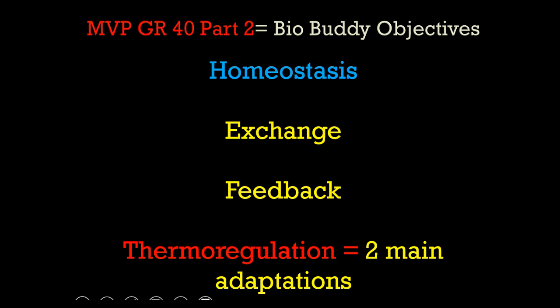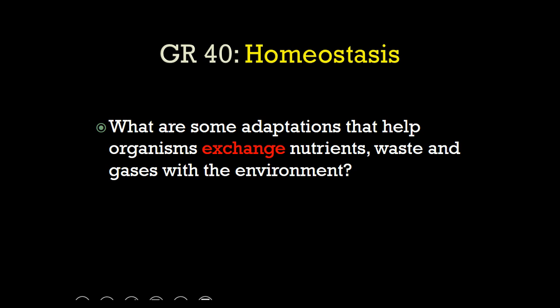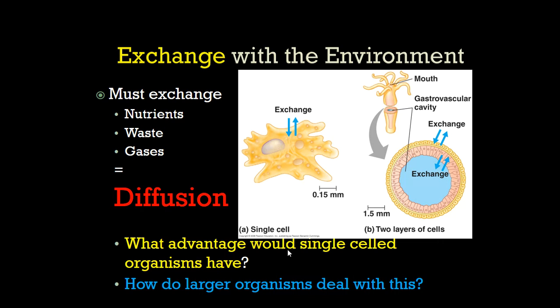There's also thermoregulation — two main types you want to know. Key notes: there are adaptations that organisms have to help them exchange nutrients, get rid of waste, and exchange gases with their environment. The main way things keep this balance and exchange things is diffusion — that's why we did the tater-haters lab. If I'm a single cell, all I have to worry about is letting waste out, letting oxygen and nutrients in, CO2 out — I can do it by passive transport, diffusion. That's why we have these beautiful membranes.